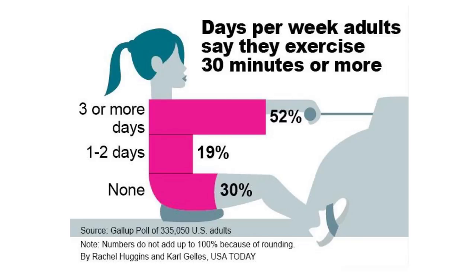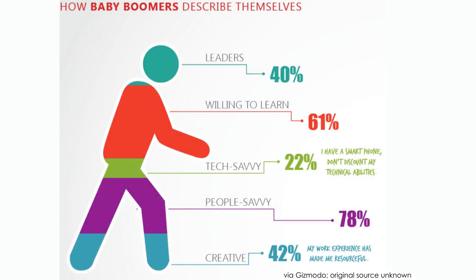Here's another one from USA Today: 'Days per week adults say they exercise 30 minutes or more.' It looks like a person on a rowing machine. That's cute. And here's a famous one: 'How baby boomers describe themselves.' It's a stacked bar chart of some sort with different terms corresponding to different parts of a body — who I guess is a baby boomer. These numbers don't even add up to 100; they're allowed to describe themselves in different ways. How are you going to compare the size of this head to the size of this leg? They're completely different shapes. This is a duck — it quacks like a duck, it walks like a duck.